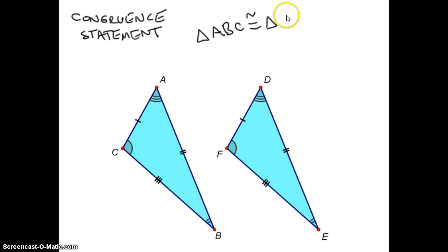And now we know A goes with D, so the first letter's got to be a D. We know that B goes with E because of the double arc, and we know that C goes with F because of the single arc, so we know that triangle ABC is congruent to triangle DEF.